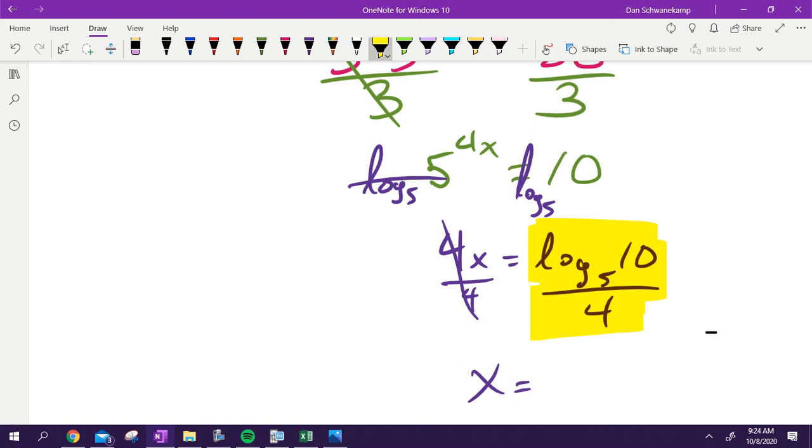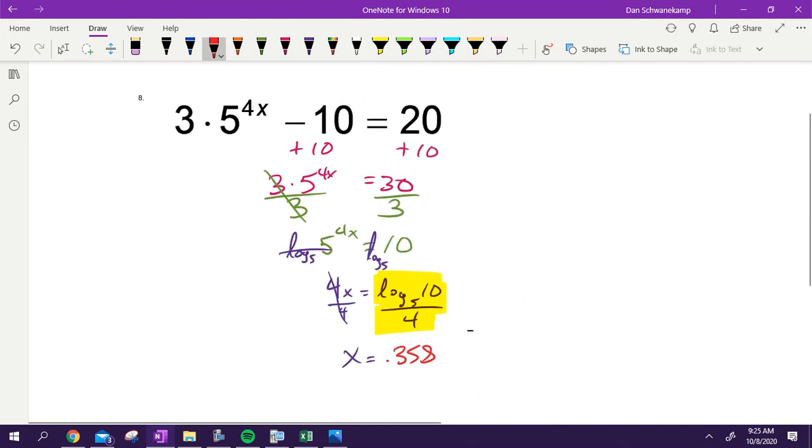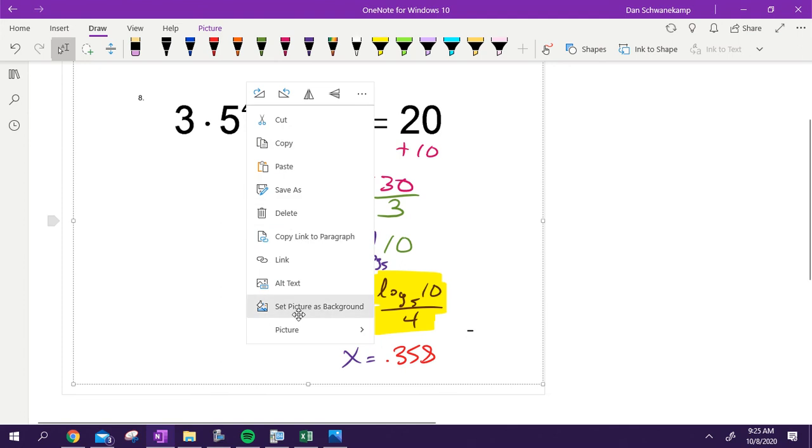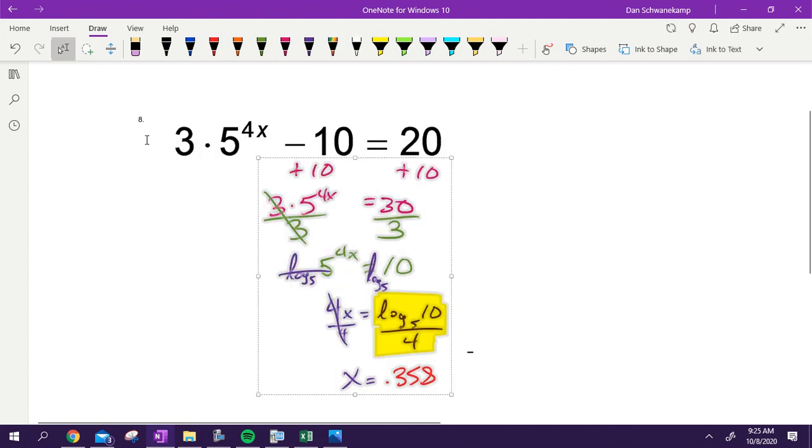Then you would get your x value, you get 0.358, I believe, when you type that in. But it's just a matter of showing the exact, that's the exact, that's the approximate. Questions there? Everybody seemed to fly through that one pretty well, which is great. Let's go the next one.